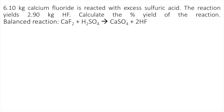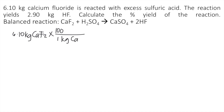We are given 6.10 kilograms of calcium fluoride — that's CaF₂. The first thing you're going to do is convert kilograms into grams. We know that 1 kilogram is equivalent to 1,000 grams, so 6.10 kilograms of CaF₂ is equivalent to 6,100 grams of CaF₂. The kilograms cancel and now we have grams of CaF₂.